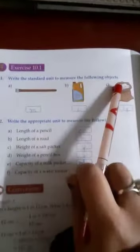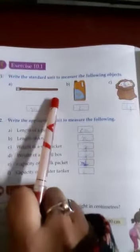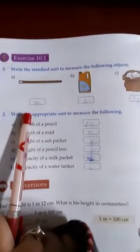Now in Exercise 10.1, the first question is write the standard unit to measure the following objects. For measuring the length of the first object, a belt, for measuring its length we will measure it in meters. The unit will be meters, so here in the box we will write meter M.